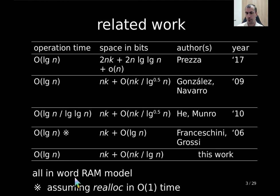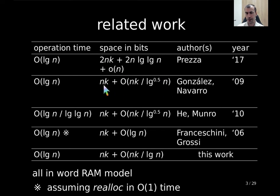All these approaches work in the word RAM model. We start with Pǎtraşcu's solution that takes 2nk plus some low-order term. But since you have n keys and each key takes k bits, ideally you want to store all keys in nk bits plus some low-order term. This factor of 2 is disturbing, and there is a data structure from Gonzalez and Navarro that exactly achieves nk plus some low-order term. These two work in logarithmic time, so the operational complexity for all three operations is essentially the same.